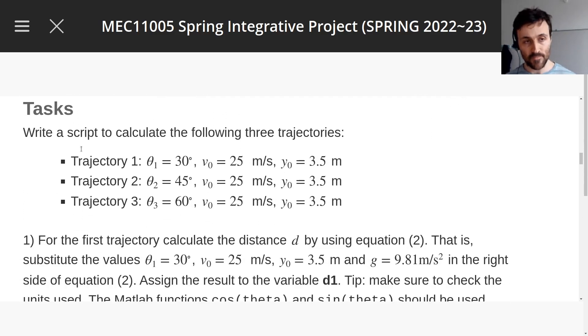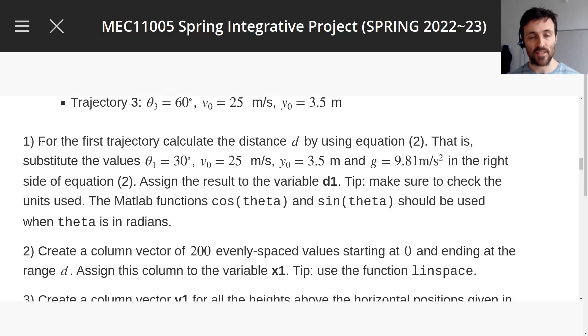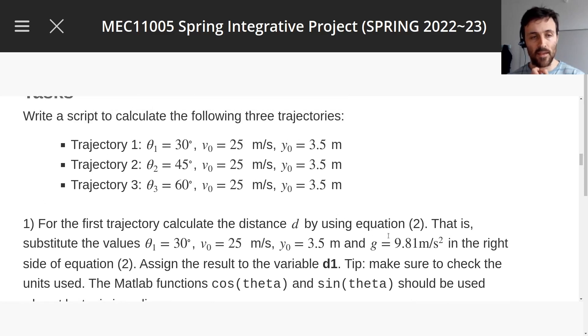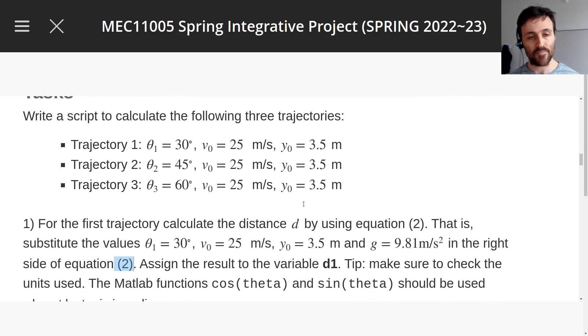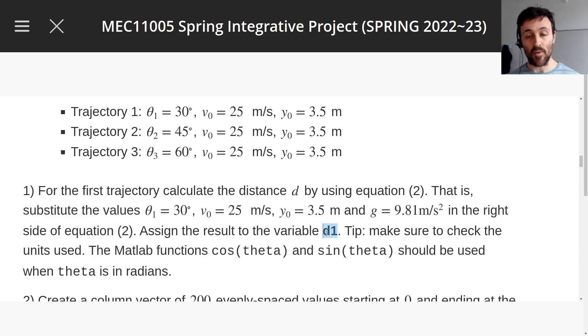Let's just get started with the first tasks. I'm going to write a script to calculate the following three trajectories. We're giving different angles that we're going to throw the rock, different initial velocities—actually the initial velocities are all the same—and so is the height of this very small hill because it's 3.5 meters. Here's the first task. We need to calculate the distance d for the first trajectory, so trajectory number one.